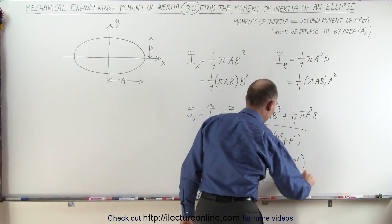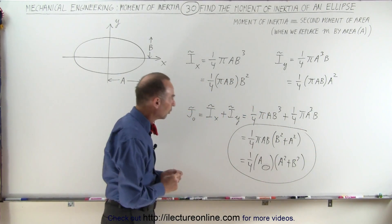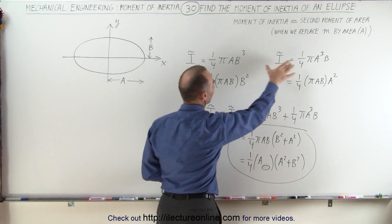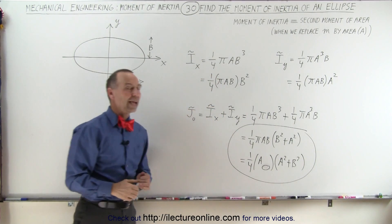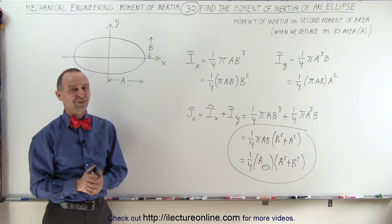So this here is the moment of inertia of an ellipse relative to the origin, and here we have the moment of inertia relative to the x and the y-axis of an ellipse. That's how it's done.